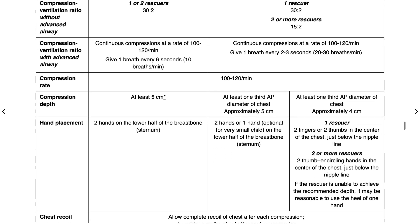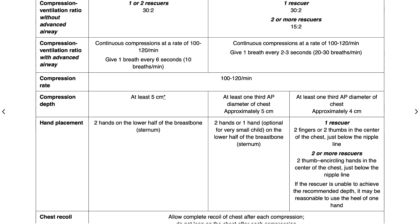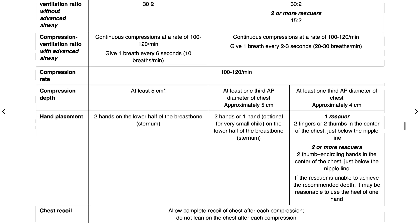For hand placement: in adult CPR, use two hands on the lower half of the breastbone. In children, you can use two hands or one hand on the lower half of the breastbone. In infants with a single rescuer, use two fingers or two thumbs in the center of the chest, just below the nipple line. For two or more rescuers, the two thumb-encircling hands technique in the center of the chest is preferred, just below the nipple line. If the rescuer is unable to achieve the recommended depth, it may be reasonable to use the heel of one hand.